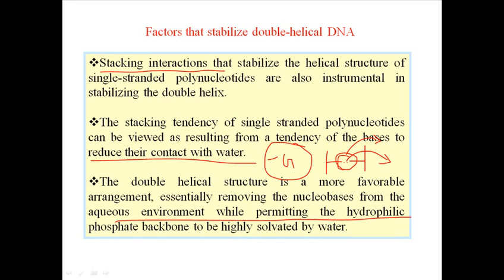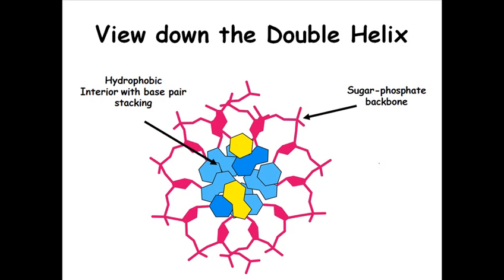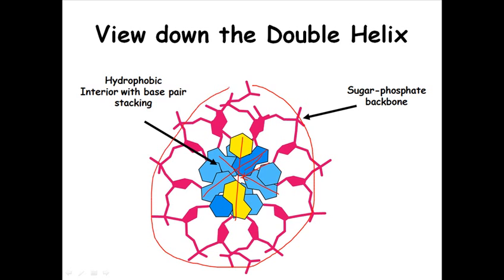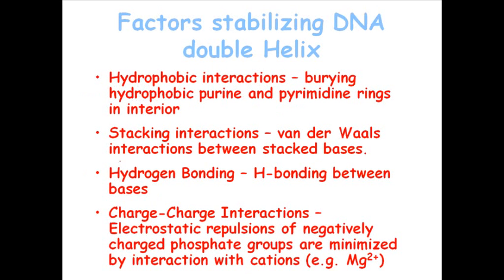Here is the DNA double helix from the upper view. From this perspective, we can see the hydrophobic interior with base pair stacking, and the sugar-phosphate backbone on the outer side. The arrangement of bases leaves a very small region between them so water molecules cannot enter inside, while the phosphate groups face outward and can freely interact with water.